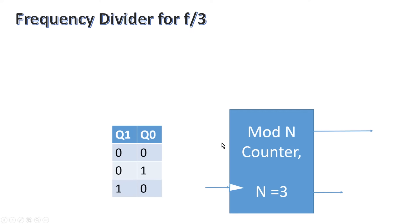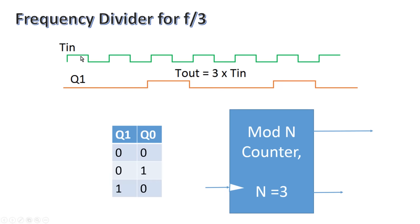In this video we are not going to focus on the design of a mod-n counter — we are going to use it as a block. A separate video on the design of mod-n counter will be linked in the top right corner. For now, let us assume we already have a mod-n counter design and are going to use it. Let us give some attention to the timing waveform. If this is the clock signal applied to the mod-n counter, I am displaying the output Q1 only.